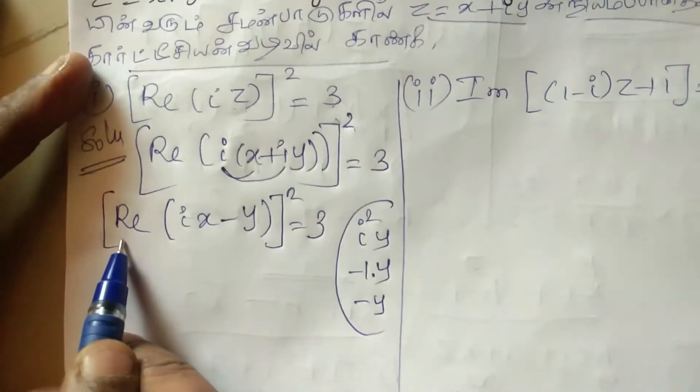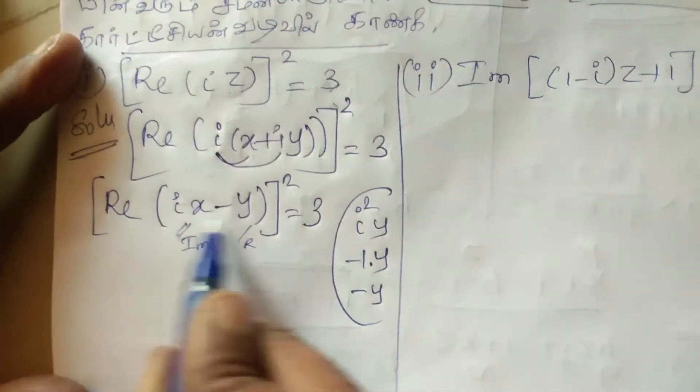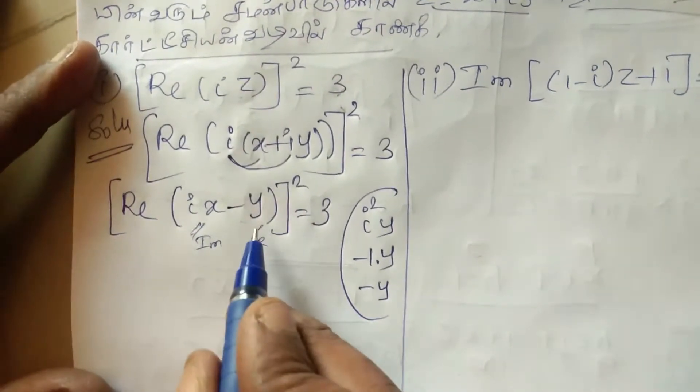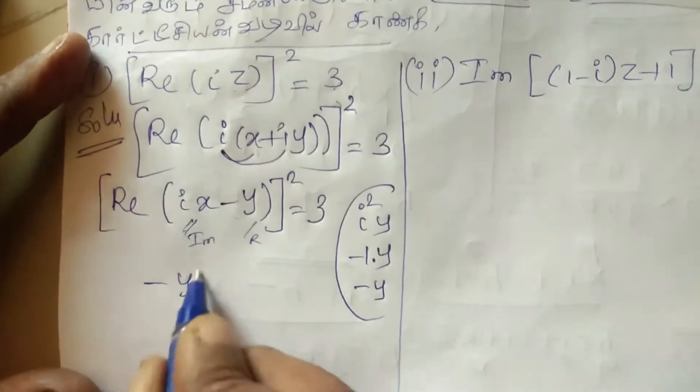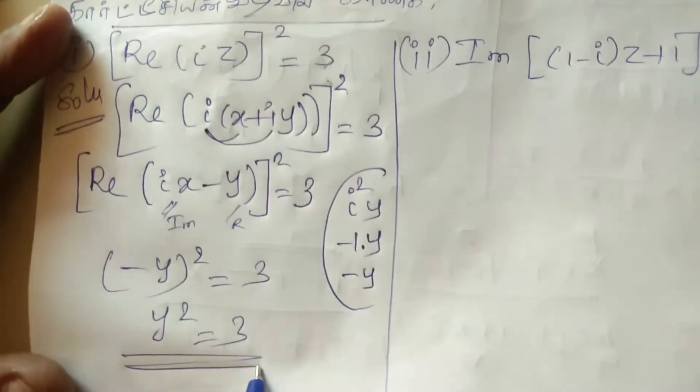With I, it's imaginary. Without I, it's real part. So real part is minus Y the whole square equal to 3. Therefore Y squared equal to 3.